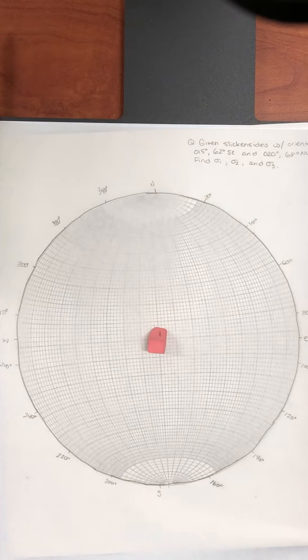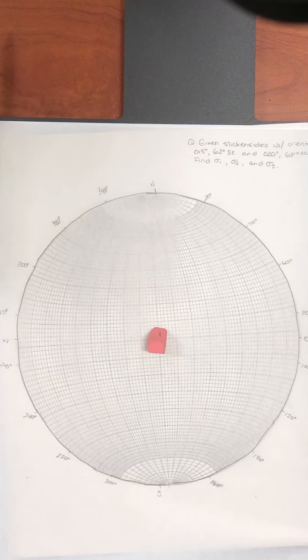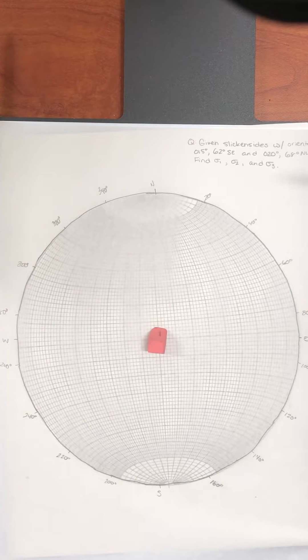All right in this structural geology help video we're going to be looking at how to use a stereo net to find the principal stresses or the orientations of the principal stresses sigma 1, sigma 2, and sigma 3.